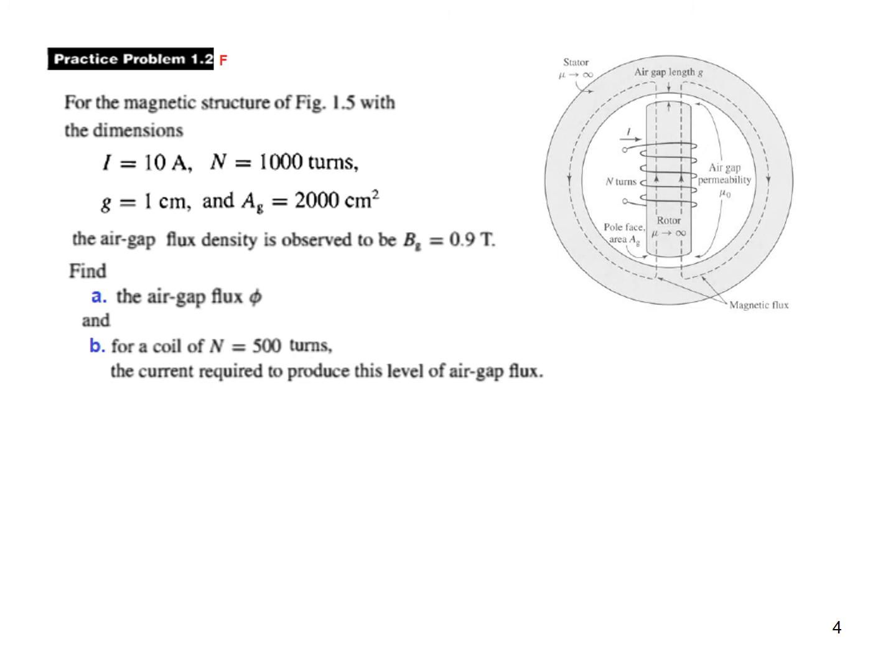Now let's do the practice problem. Same dimensions as the circuit. Now here the flux density is given and we have to find the flux in the first part, and in the second part the number of turns is changed, so we have to calculate the current required to produce the same level of air gap flux, that is this one.